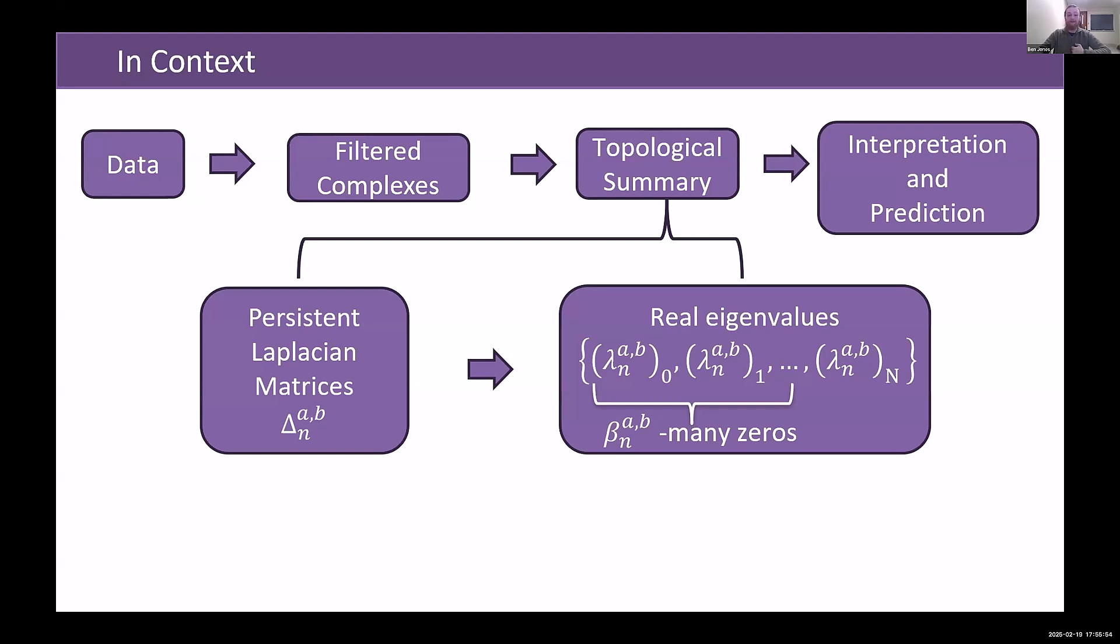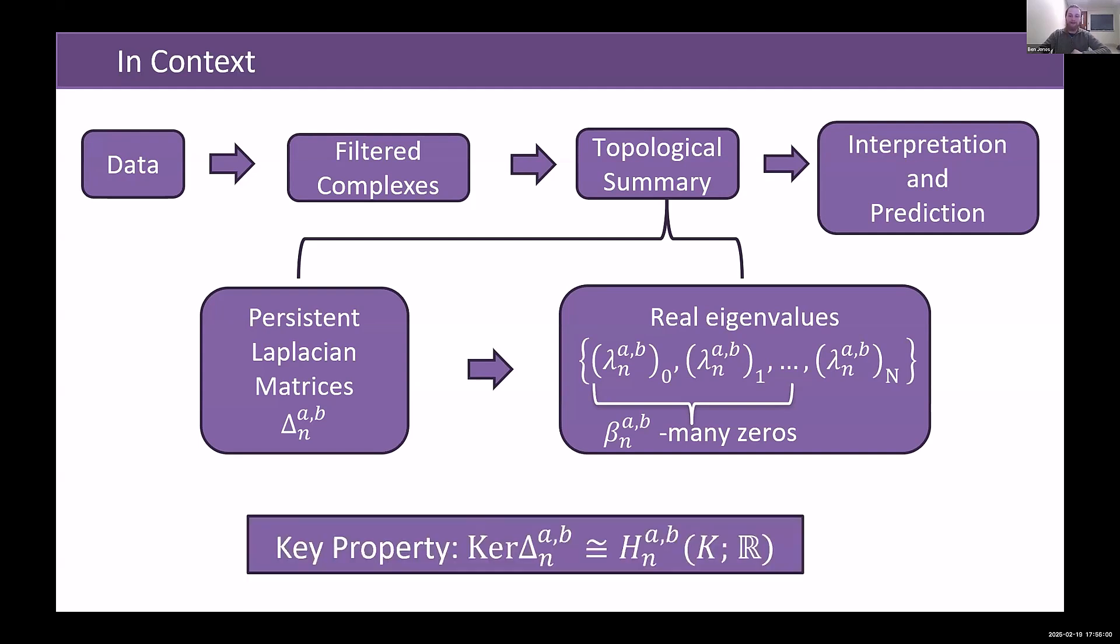So that makes it a really useful way to capture both persistent homology and some additional information through the non-zero eigenvalues. And the key property aligning with that is that the kernel of this operator, the persistent Laplacian, is isomorphic to persistent homology with real coefficients.